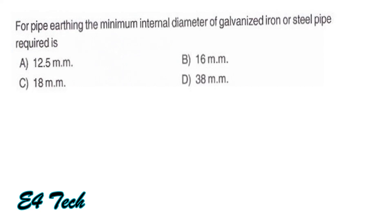For pipe earthing, the minimum internal diameter of galvanized iron or steel pipe required is 38mm diameter. That is option DN.